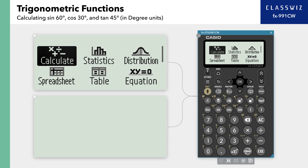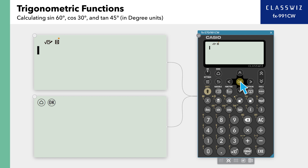Press Home, then select Calculate. Check to make sure that the angle unit at the top left of the screen is D for degrees.